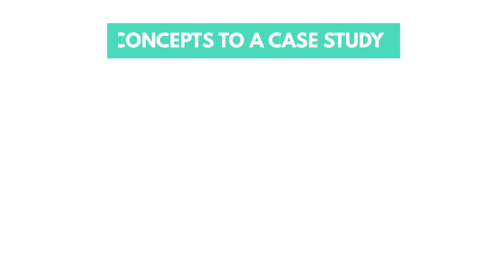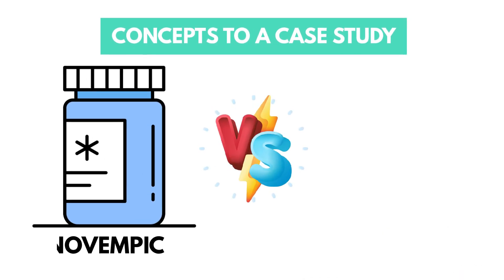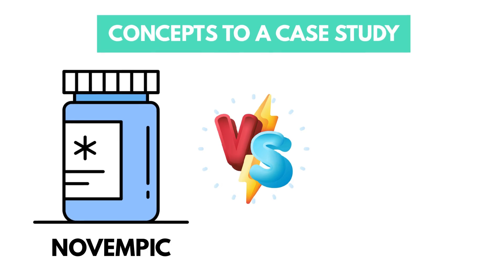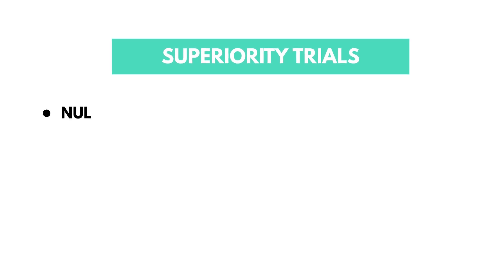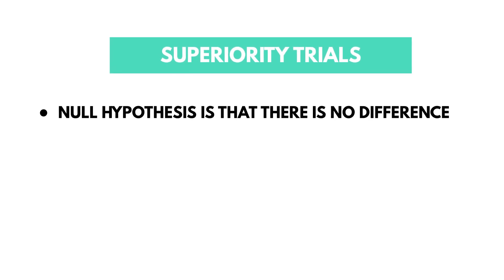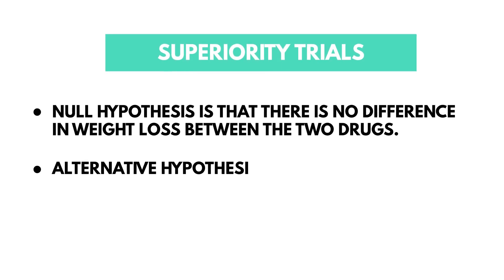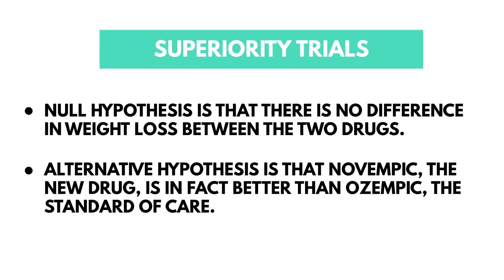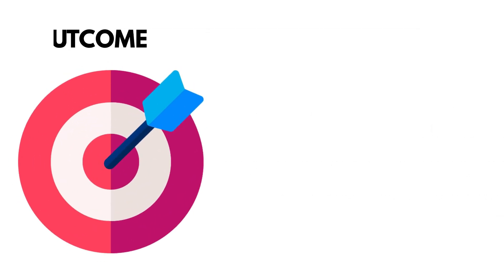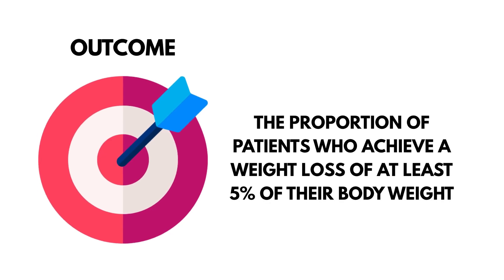Now let's apply these concepts to a case study where we have invented a new medication for weight loss called Novempic, and we are comparing it to Ozempic, which we are considering as the standard of care. Let's first calculate the sample size for a superiority trial where our null hypothesis is that there is no difference in weight loss between the two drugs, and our alternative hypothesis is that Novempic is in fact better than Ozempic. Our categorical outcome is the proportion of patients who achieve a weight loss of at least five percent of their body weight.